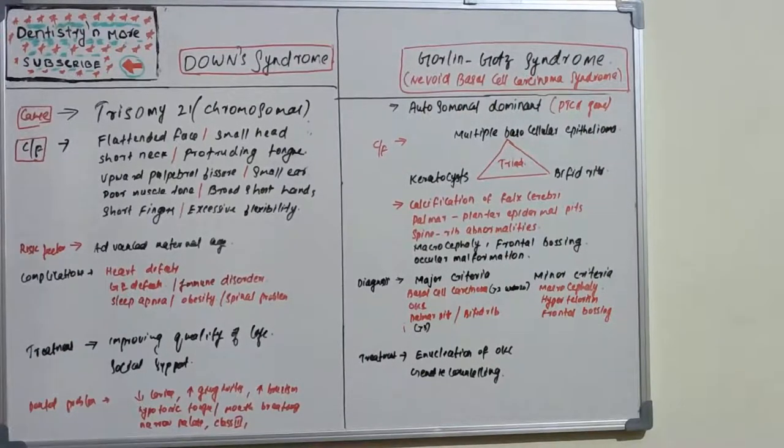As the age of mother increases, the chances of Down syndrome also increase. These Down syndrome kids or persons will be having problems with heart and gastrointestinal defects.